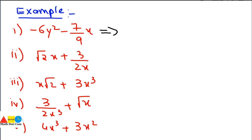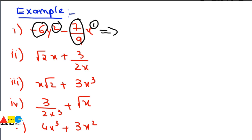First example: −6y² − 7/9 x. We check all three conditions. Condition 1: exponents are 2 and 1, both non-negative. Condition 2: exponents 2 and 1 are integers. Condition 3: the coefficients are real numbers. All three conditions are satisfied, so this algebraic expression is a polynomial.